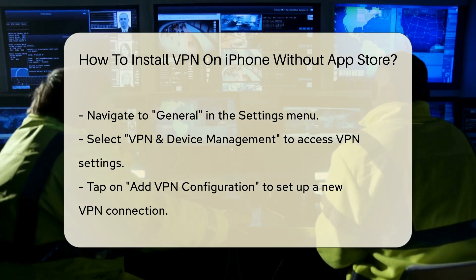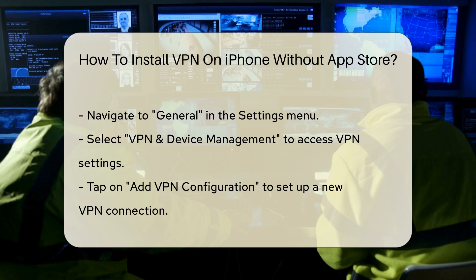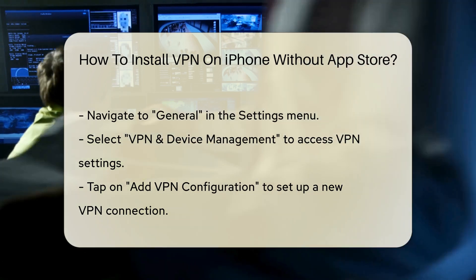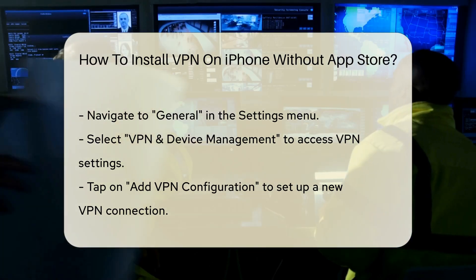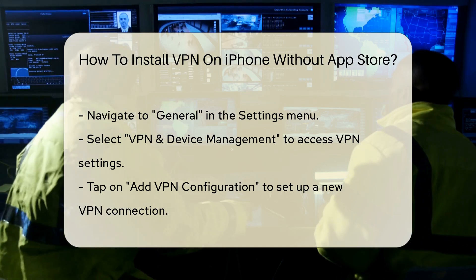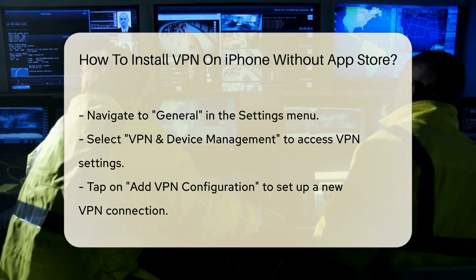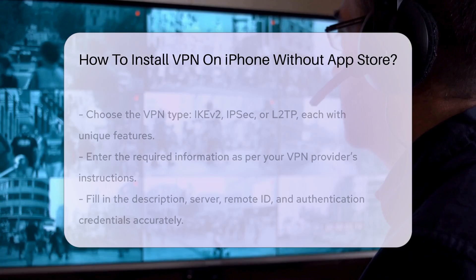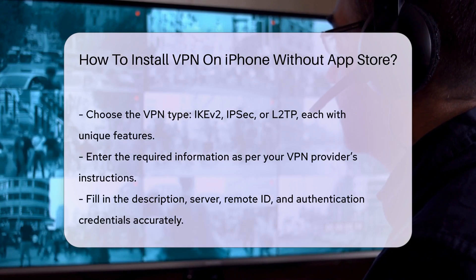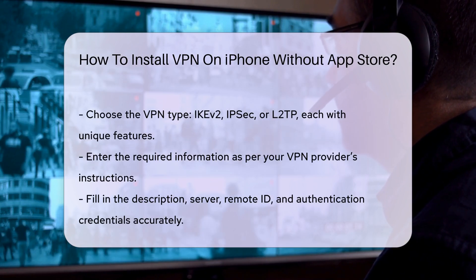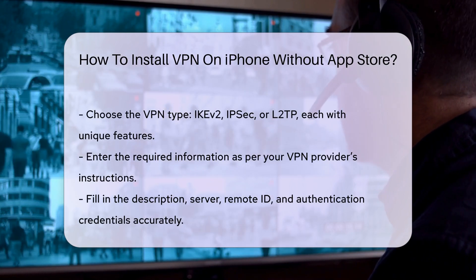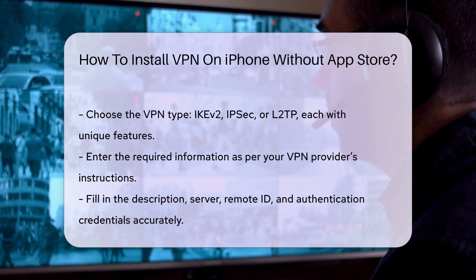Here you will see options to configure your VPN connection. Choose the type of VPN you are using, such as IKEv2, IPsec, or L2TP. Each type has distinct features and security protocols. Enter the required information based on your VPN provider's instructions. Fill in the description, server, remote ID, and authentication information.